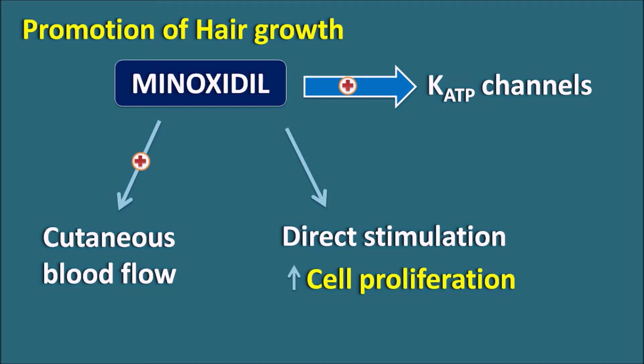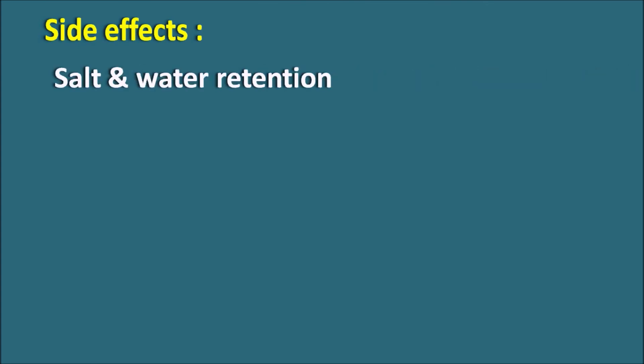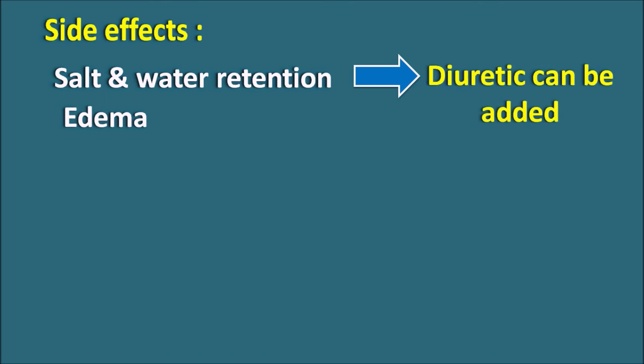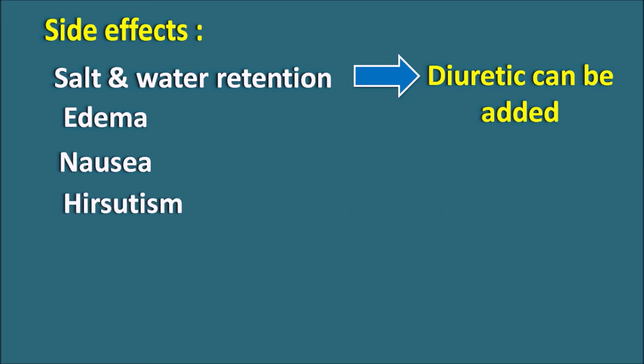In this way, Minoxidil acts as a vasodilator as well as a hair growth promoter. Regarding side effects, one important side effect is salt and water retention — because of activation of ATP-sensitive potassium channels, it can reduce the excretion of salt and water, producing retention that increases body volume and can cause edema. Because of these side effects, Minoxidil can be combined with diuretics to reduce body volume. Other side effects include nausea and hirsutism — unwanted hair growth.